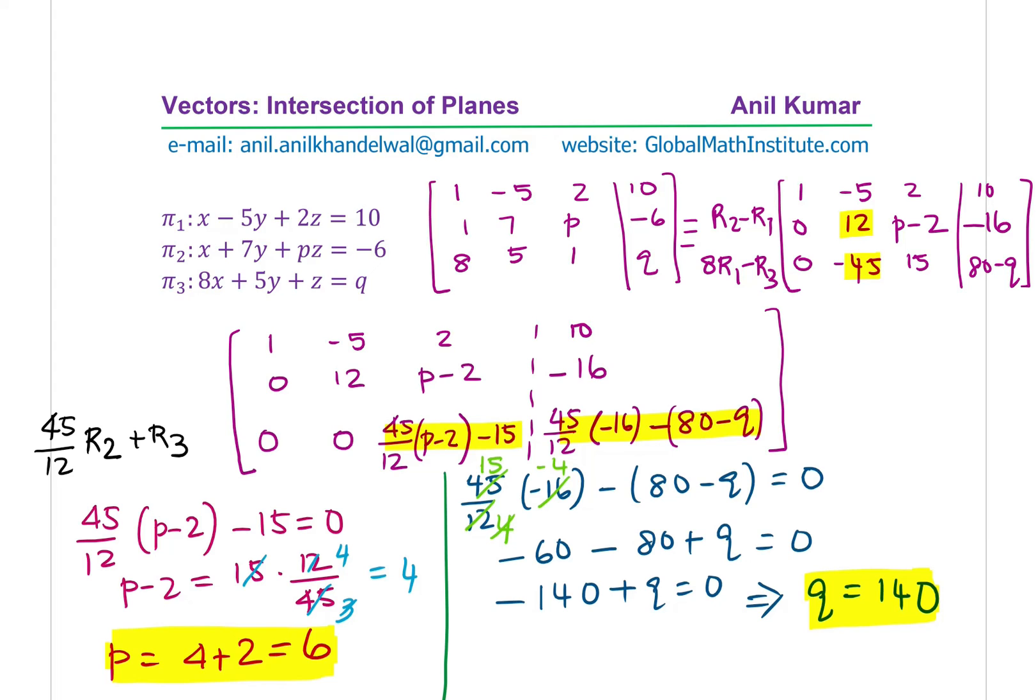So we got both the answers, the value of P and Q in this particular case. That is how you solve this question. We can write down our answer: P equals 6 and Q equals 140. Now, as an extension to this particular question, you could actually find the equation of the line of intersection. So let me extend the question: find the equation of the line of intersection.